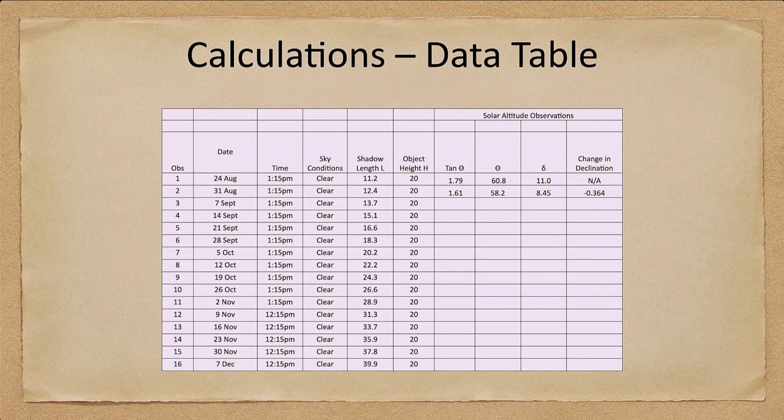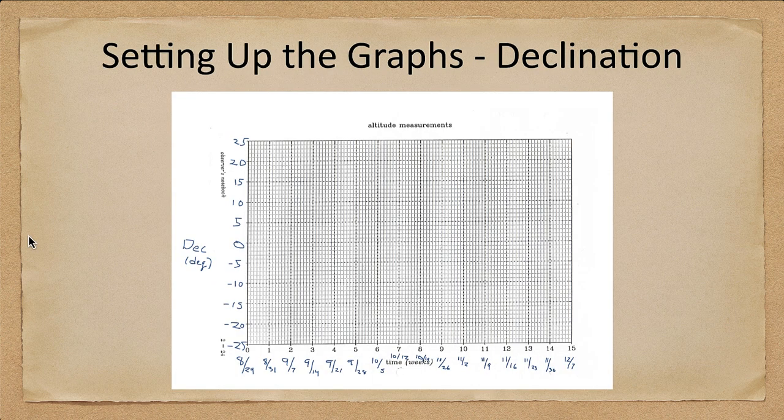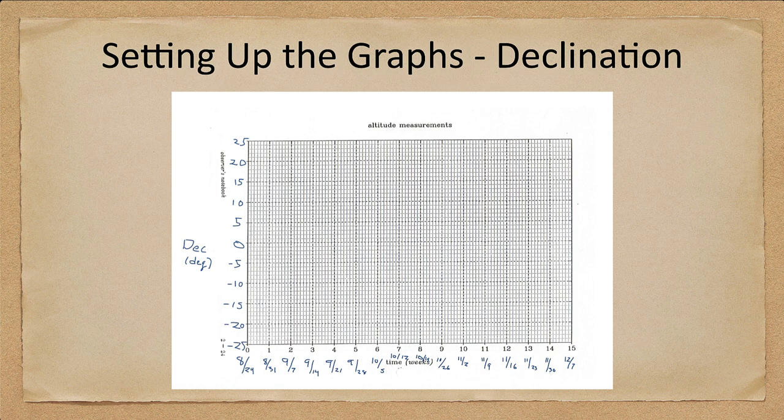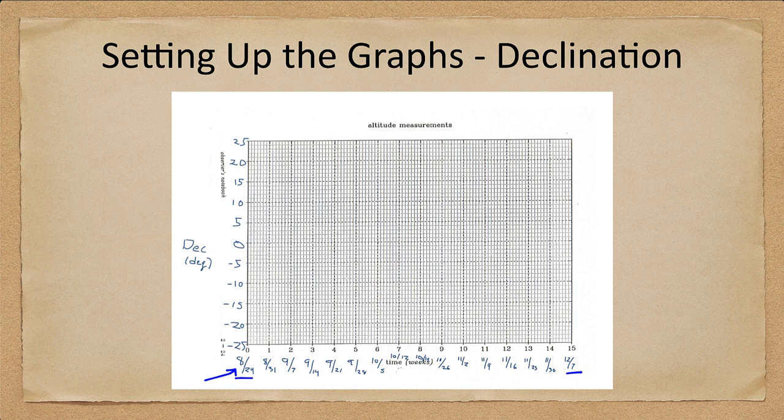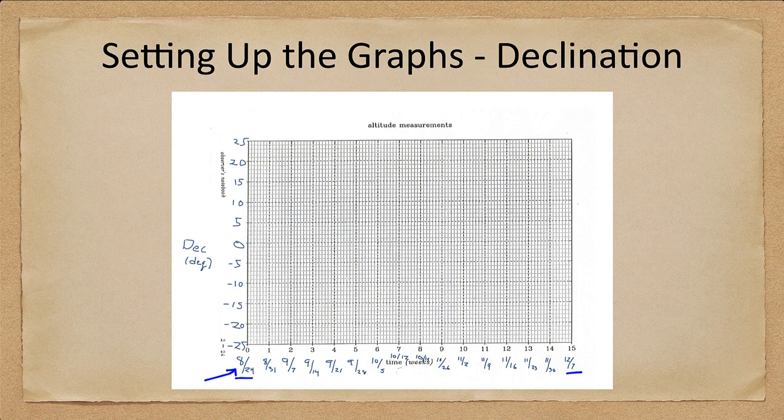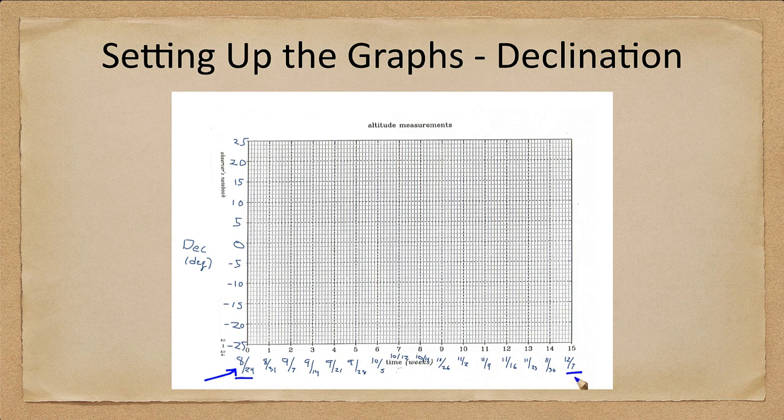Let's look at how to set up the declination graph first. Using the graph paper I provide, you will set the date scale here. You will put the first date in the data table at week zero. Make sure you're not skipping in. Start at week zero, and that allows you to fit all of the data on the graph. So in this case for fall, you will go from August 24th to December 7th. This entire graph is set up and scaled properly so that you can use it for all data sets.